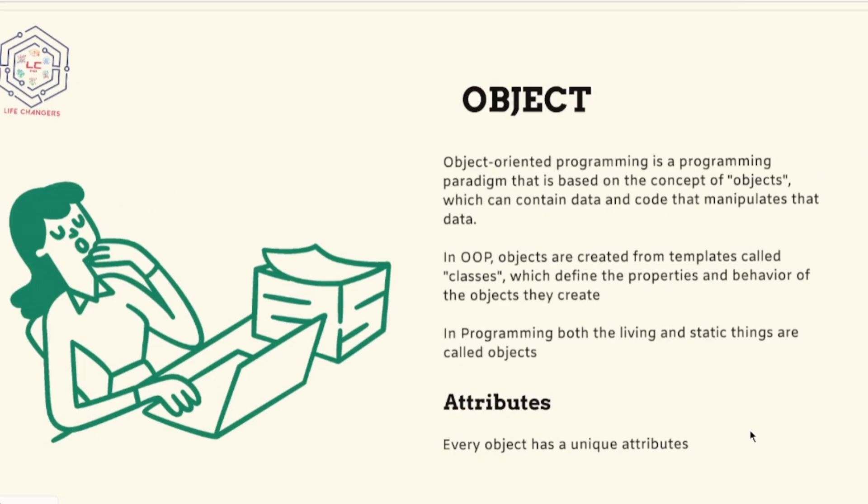Turning to attributes, most of the objects perform tasks as well. For example, we eat, we walk, we sleep. Every object in the universe has a unique attribute and can perform tasks.